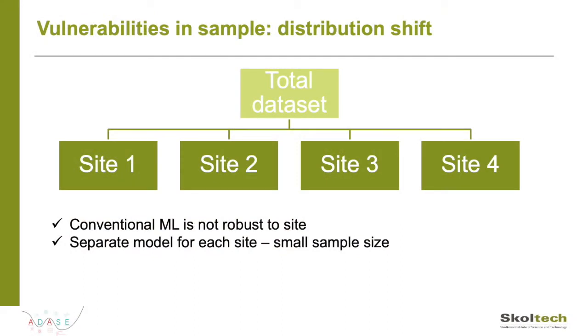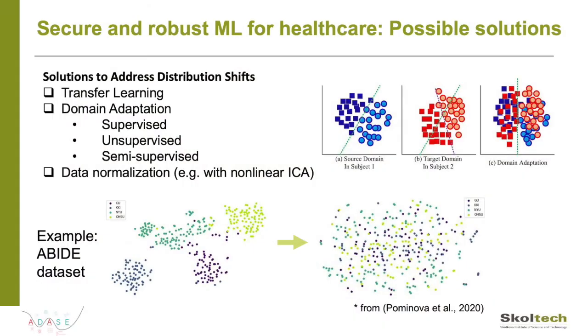Consider we have four sites of data collection. With conventional machine learning techniques, if we create a single model for the whole dataset, it might not be robust to site differences. And if we create a separate model for each site, we will have many models trained on small samples, which leads to decreased accuracy and robustness. There are modern solutions to address distribution shift — for example, transfer learning and domain adaptation techniques, which aim to find or construct a common representation space for many domains. This can be achieved through adversarial machine learning techniques, where feature representations from samples in different domains are encouraged to be indistinguishable. In our studies we use both approaches as well as data normalization for sample improvement.